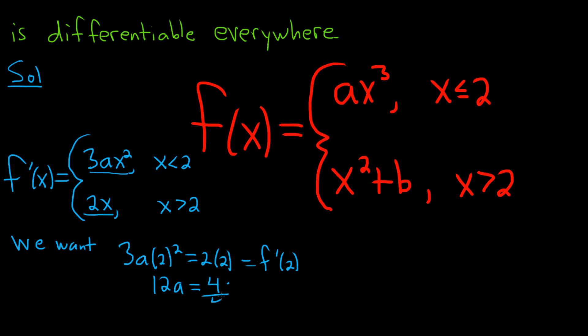Dividing by 4 is going to give us, well dividing by 12 rather, we have 12a equals 4. I'm trying to solve for a. So divide by 12, and we get a equals 1/3. So we have the value of a that will make the derivative the same.